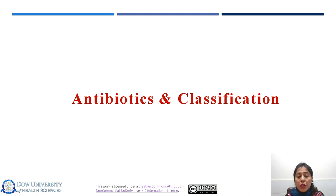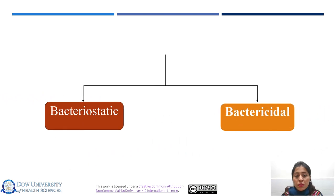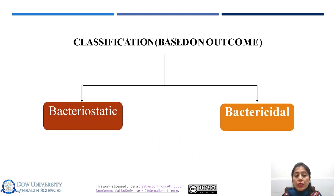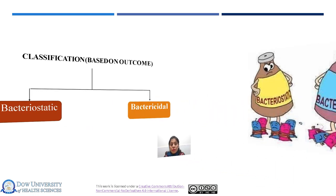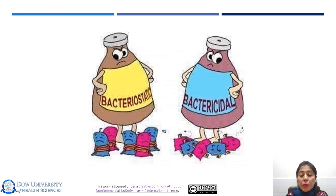Now we will talk about antibiotics and their classification. Based on the outcome, antibiotics are broadly classified into bacteriostatic and bactericidal drugs. Bacteriostatic drugs are those that only inhibit the growth of microorganisms, while bactericidal antibiotics are those that kill the microorganism. In general, the use of bactericidal antibiotics is preferred, but many factors may dictate the use of bacteriostatic antibiotics. When a bacteriostatic antibiotic is used, the duration of therapy must be sufficient to allow cellular and humoral defense mechanisms to eradicate the bacteria. This animated representation shows bacteriostatic antibiotics only inhibiting growth while bactericidal antibiotics cause killing of the microorganism.